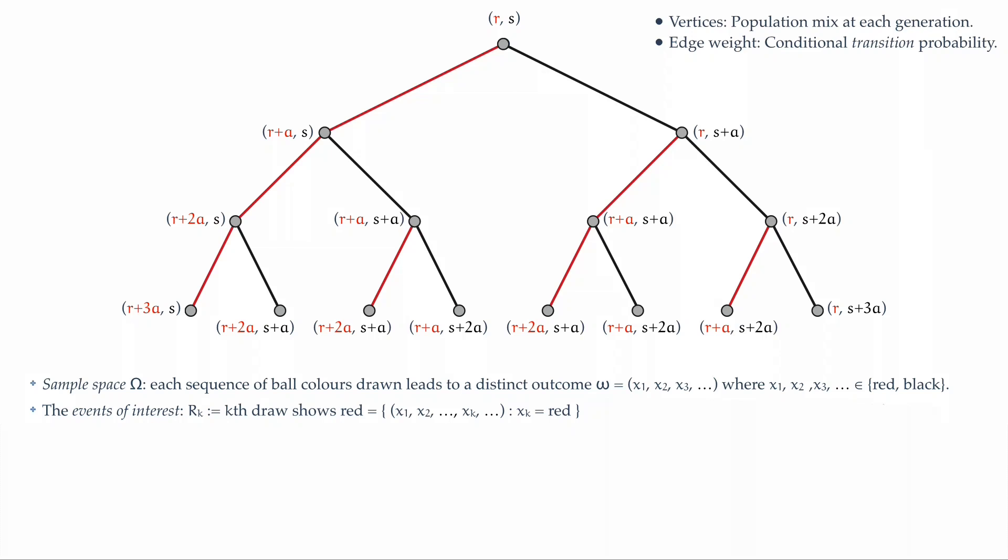These are naturally events of interest, and of course they have complements. What is a complement of Rk? Well, let's call it Bk. It represents the fact that the kth ball drawn was black. You observe that these events, Rk, create a natural partition of the space. On the first step, I have to get either a red ball or a black ball. I can't get both, and so they naturally partition the space.